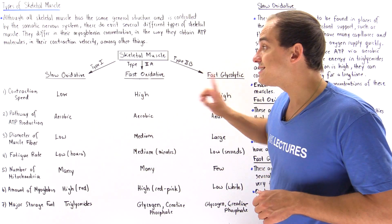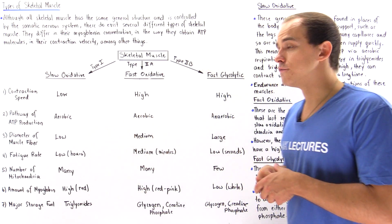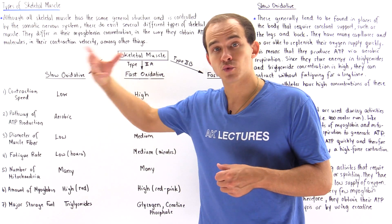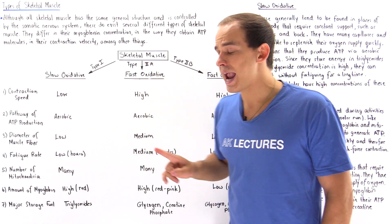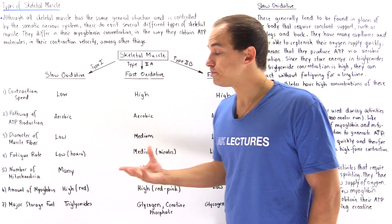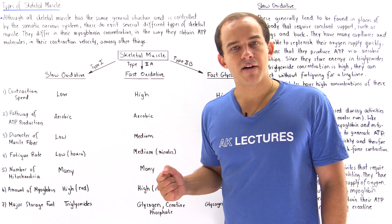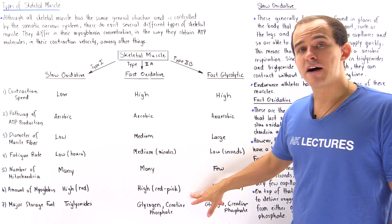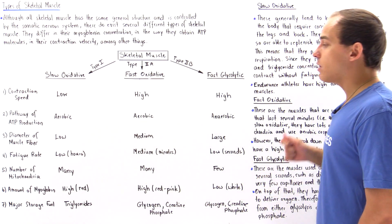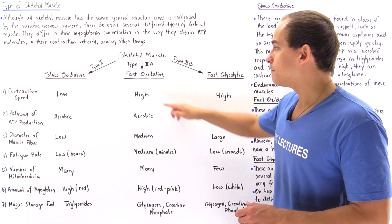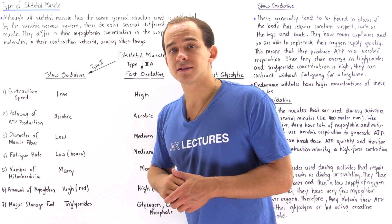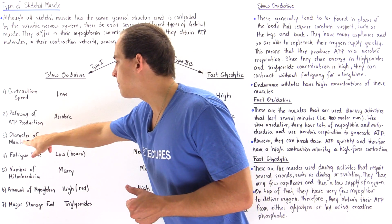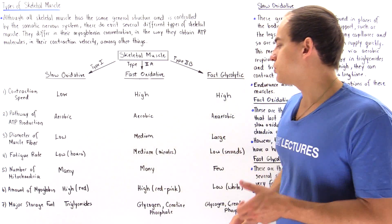The major supply of fuel in fast oxidative is not fatty acids but glycogen — the polymer version of sugar — where we break down glycogen into glucose. The glucose goes into glycolysis, then into the Krebs cycle and onto the electron transport chain. These muscles also contain many mitochondria and many capillaries. They also use creatine phosphate, passing its phosphate group onto ADP to form ATP. The thickness of the muscle fiber for fast oxidative is higher than in slow oxidative, producing a slightly higher force.